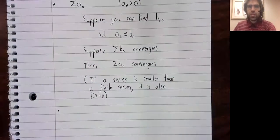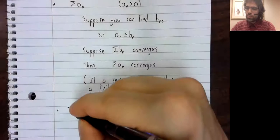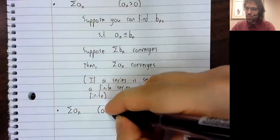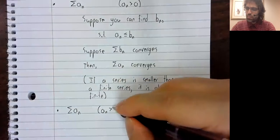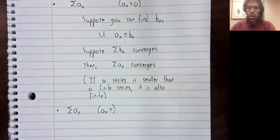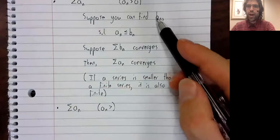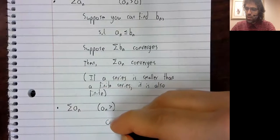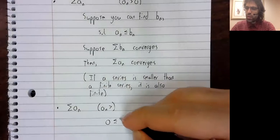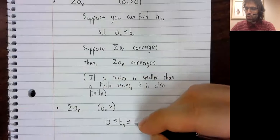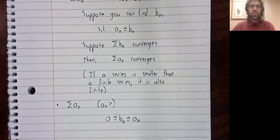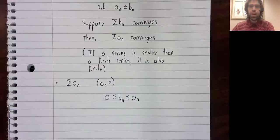The second part of the comparison test also involves finding new terms. This time suppose we find positive terms that are less than A sub N.